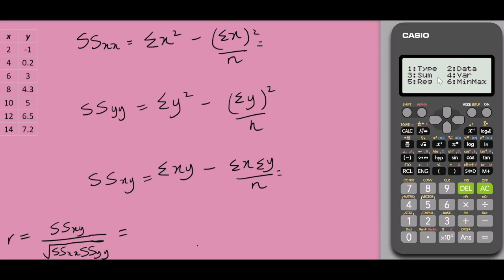Shift 1, if we select 3 we would get the values of the summation of x square, summation of y square, summation of x, and not forgetting the sum of xy.